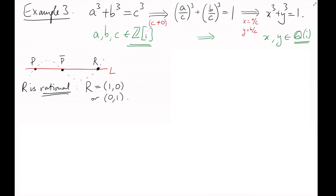Secondly, let's calculate the gradient of this line through p and p bar. Well, if the x coordinate of p is alpha plus beta i, and the y coordinate is gamma plus delta i, with alpha, beta, gamma, delta in Q, then the gradient ends up being delta over beta. This is also in Q. This is also rational.